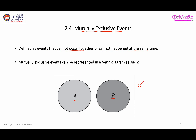In other words, there is no intersection. When you have mutually exclusive events, there is no intersection — they are clearly separated. That is how our Venn diagram will look.